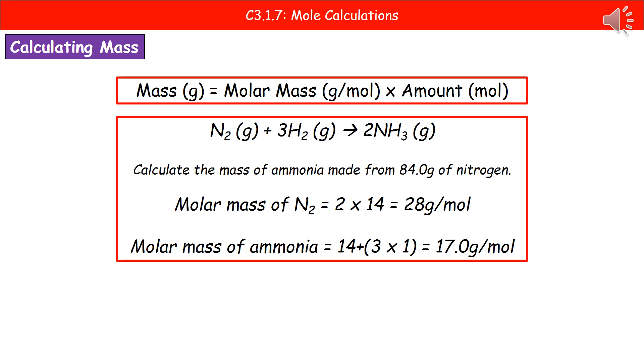The first thing we need to do to solve that question is to work out the molar masses of the relevant chemicals. In this case, the only two we're looking at are nitrogen and ammonia. So the molar mass of nitrogen, which is N2 as its symbol, is going to be 2 times the atomic mass of nitrogen, which is 14. So that gives us 28 grams per mole.